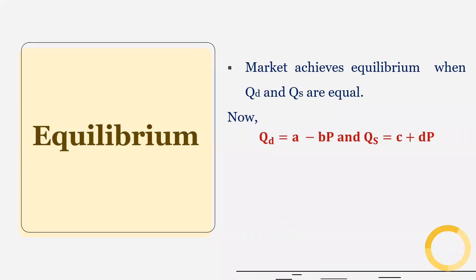So quantity demanded is equal to A minus B times P, and quantity supplied is equal to C plus D times P. These are demand and supply equations. Now, these two are equal. Therefore, equilibrium price is equal to A minus C divided by B plus D. This is the mathematical derivation.